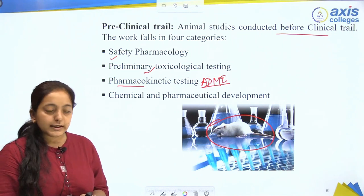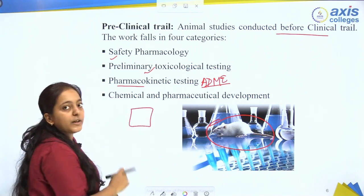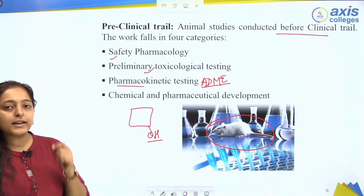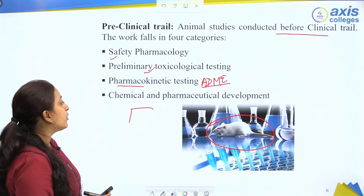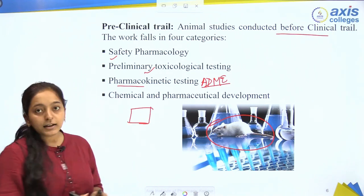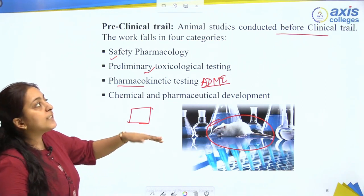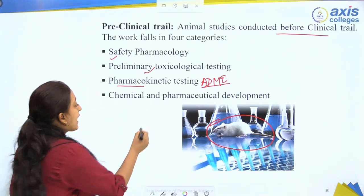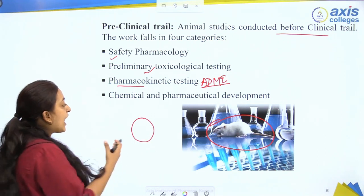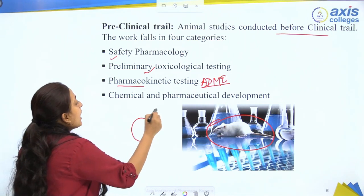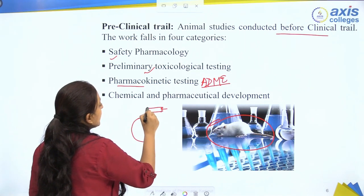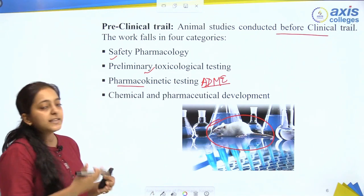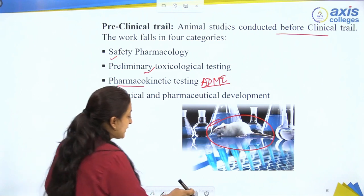For example, if your drug has a certain structure with an OH group, and you notice that removing that OH group makes the drug more effective, you can identify that in the pre-clinical trial. For pharmaceutical development, suppose you planned a tablet formulation but found it is not effective via the oral route — you can try a parenteral route instead. These aspects are developed in this particular phase.